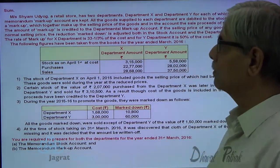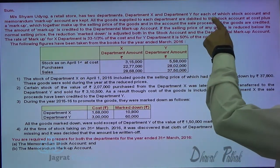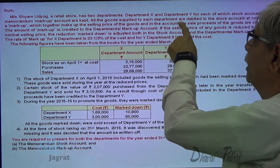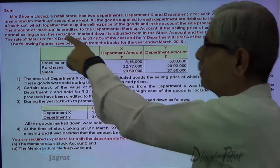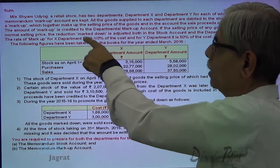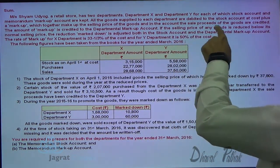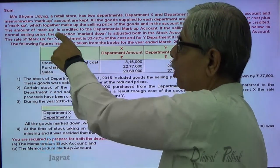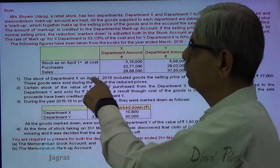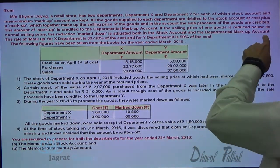Mr. Shyam Udyuk, a retail store, has two departments — Department X and Department Y — for each of which a stock account and markup account are kept. All goods supplied to each department are debited to the stock account at cost plus markup, which together make up the sales price. The sales proceeds are credited, and the markup is credited to the departmental markup account. If the selling price of any goods is reduced below the normal selling price, the reduction (markdown) is adjusted to the stock account and departmental markup account.